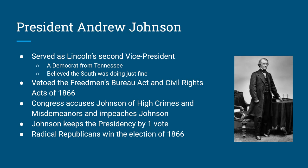The president after Lincoln was assassinated is Andrew Johnson, and he's an interesting case. Johnson was a Democrat, whereas Lincoln was a Republican. Lincoln chose a Democrat for his vice president the second time because he wanted to show he was willing to work with everybody and thought this would bring the country together. When the war was over, Johnson said the South was doing well, slavery's over, let's just let things go. When Congress tried to pass the Freedmen's Bureau Act and the Civil Rights Act of 1866, Andrew Johnson vetoed them. Congress then passed some laws limiting what Johnson could do; Johnson knew the laws were unconstitutional and said he wasn't going to listen to them.